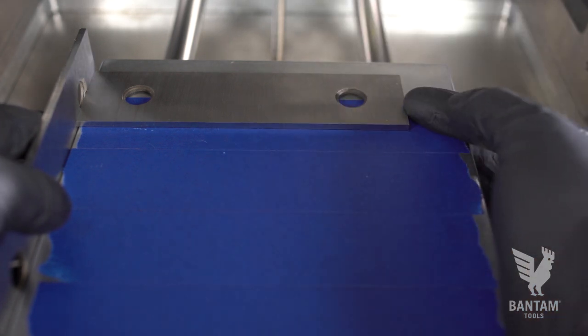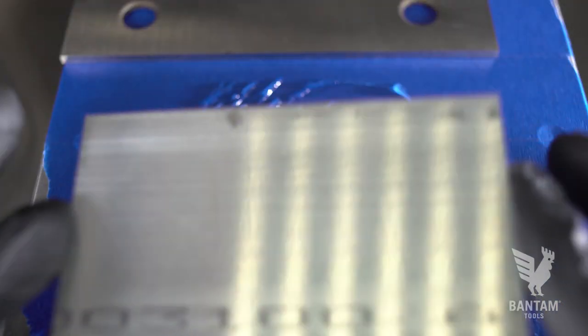Use a parallel or other straight edge to help align the stock. Since each side is milled in one setup, it's okay if it's not absolutely perfect.